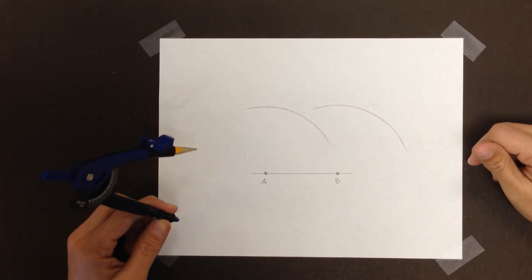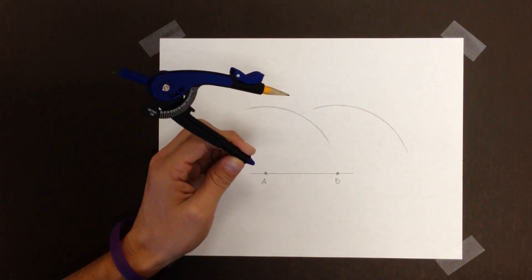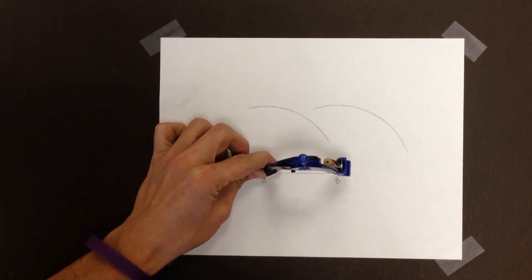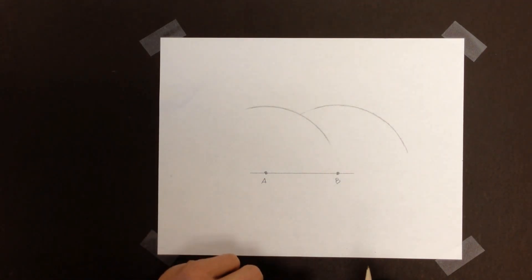So I've now got two arcs, and I've made sure the compass hasn't changed widths. See, the distance between A and B is still the same. That's good.